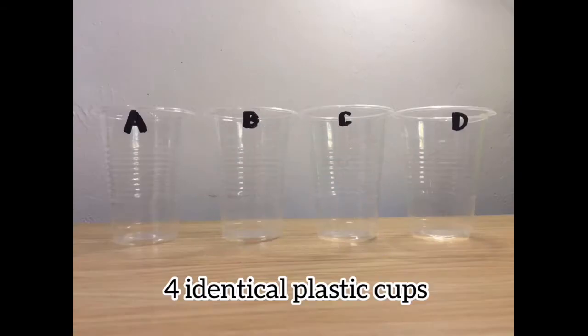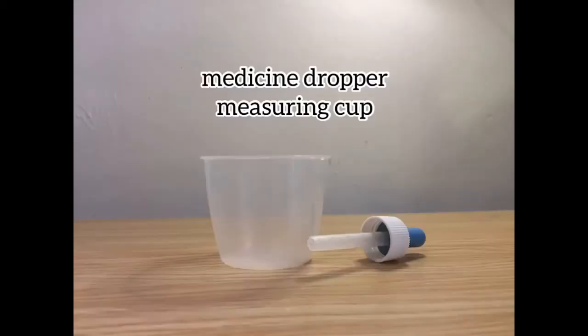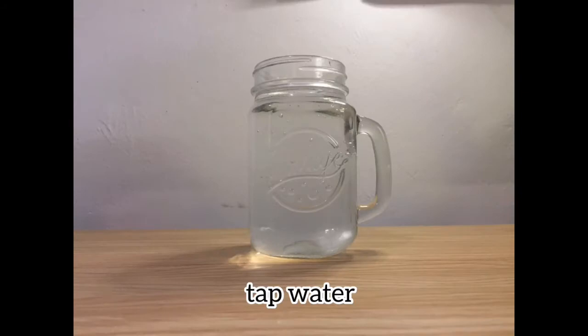First, prepare four identical plastic cups and label them with A, B, C, and D. Food color, you may choose any color that you want to use. Medicine dropper and measuring cup, a tablespoon for stirring, and last is tap water.